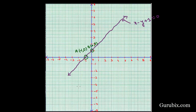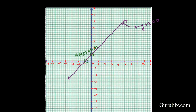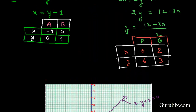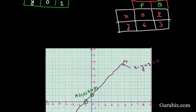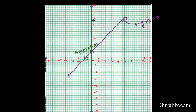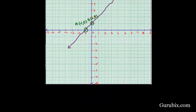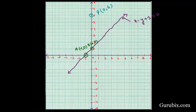Now we plot the points from equation 2. Point P has coordinates (0, 6), which we mark here at 0 and 6. Point Q has coordinates (2, 3), which we mark here at 2 and 3. We then draw a straight line through these two points to represent the equation 3x plus 2y minus 12 equals to 0.